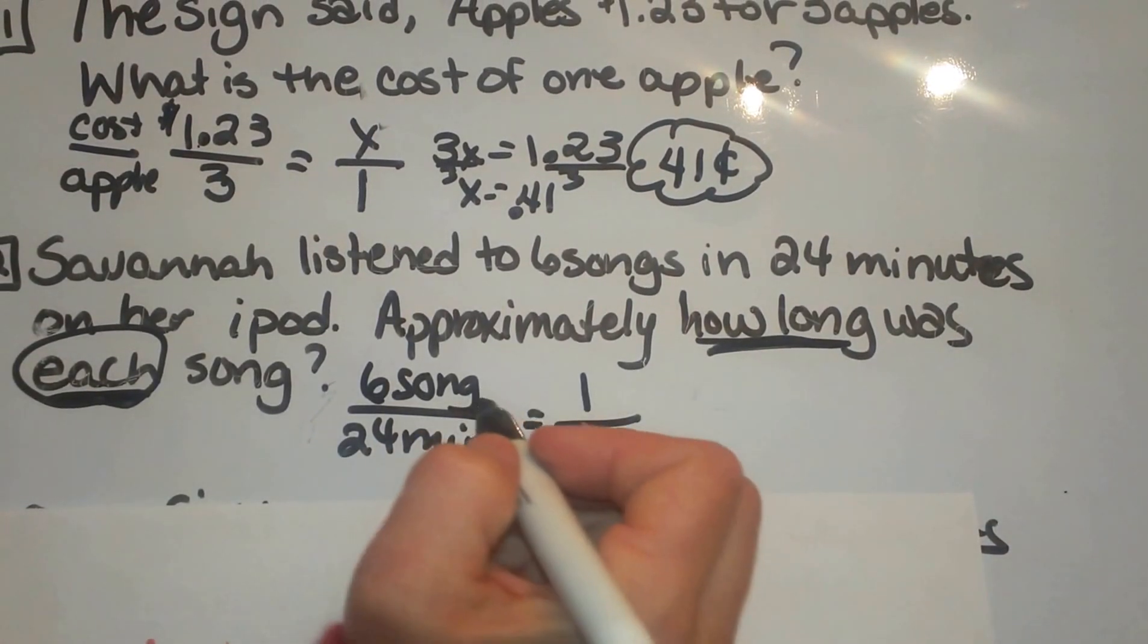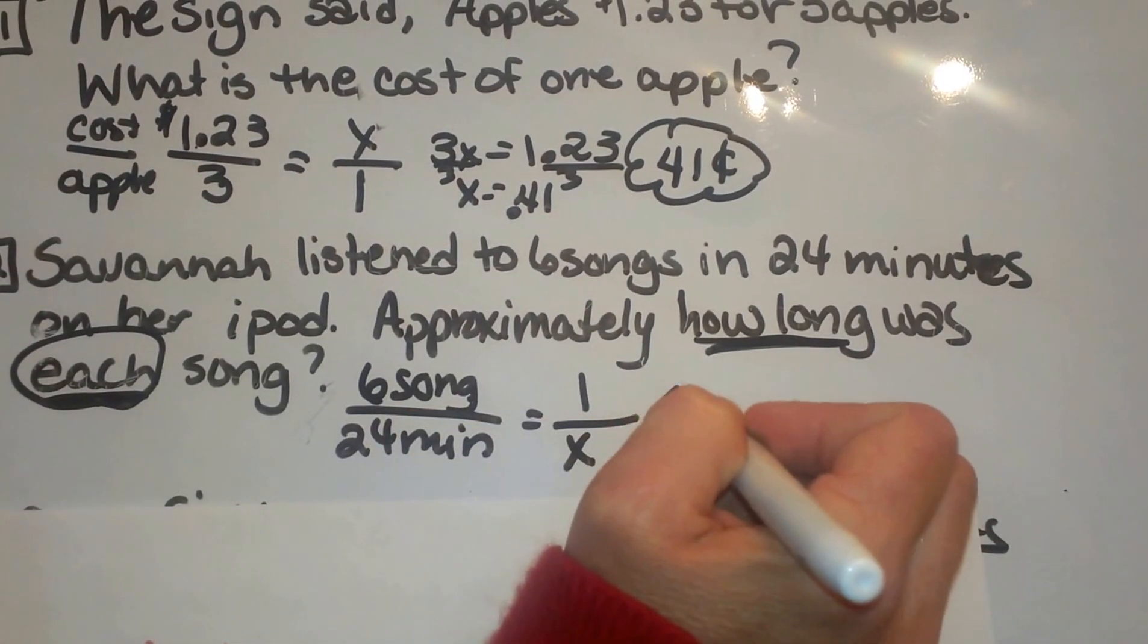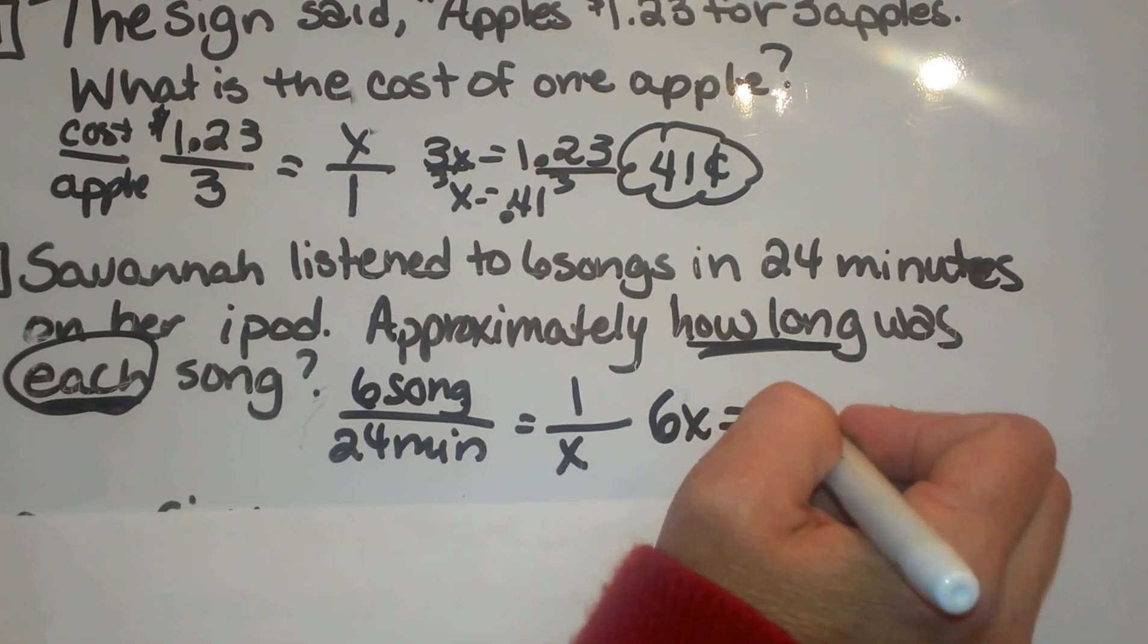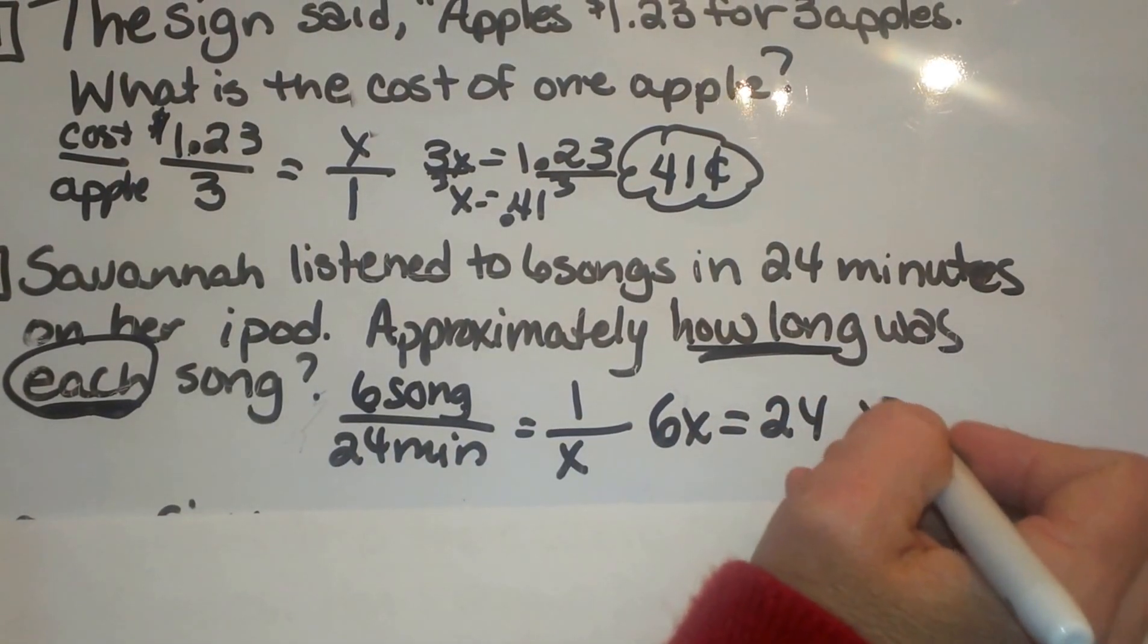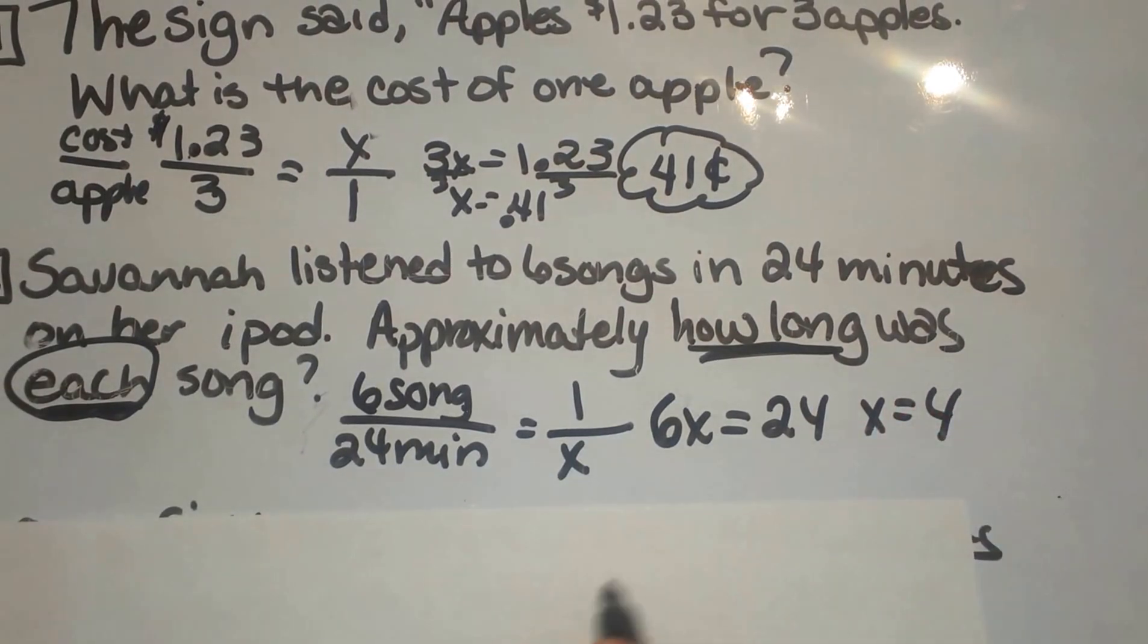Now let us do a cross product. Six times x is 6x. Twenty four times one is 24. So x is 4. Now let us look at the unit measure.